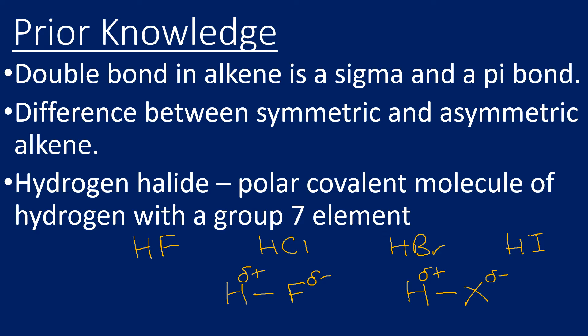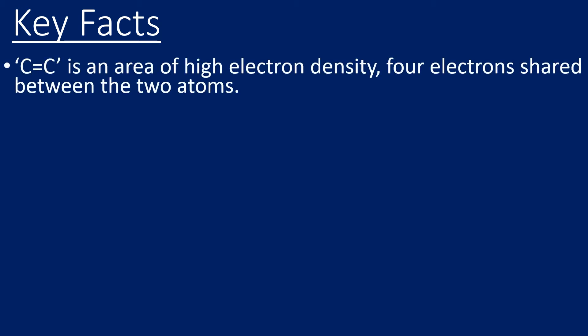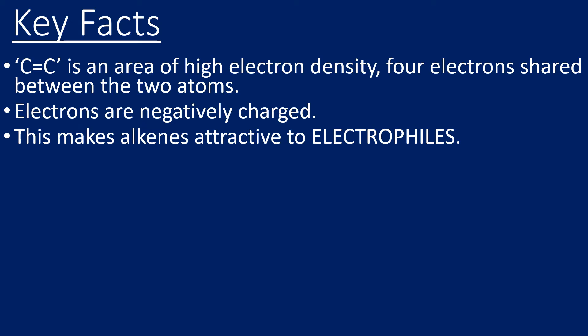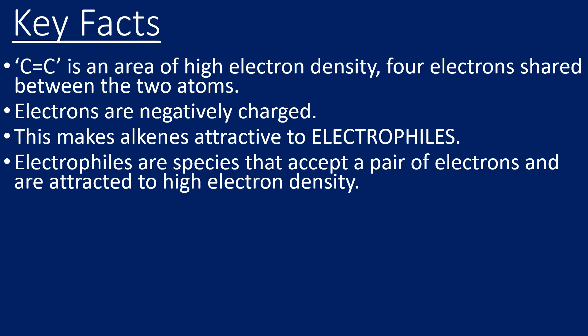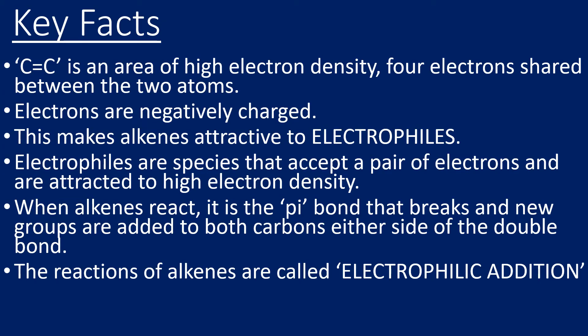The carbon-carbon double bond is an area of high electron density because there are two pairs of electrons — the pi bond and the sigma bond — giving four shared electrons. Since electrons are negatively charged, this makes alkenes attractive to electrophiles. An electrophile is a species that accepts a pair of electrons and is attracted to areas of high electron density. When alkenes react, those pi bond electrons are donated to an electrophile, and new groups are added to both carbons either side of the double bond. These reactions are called electrophilic addition.